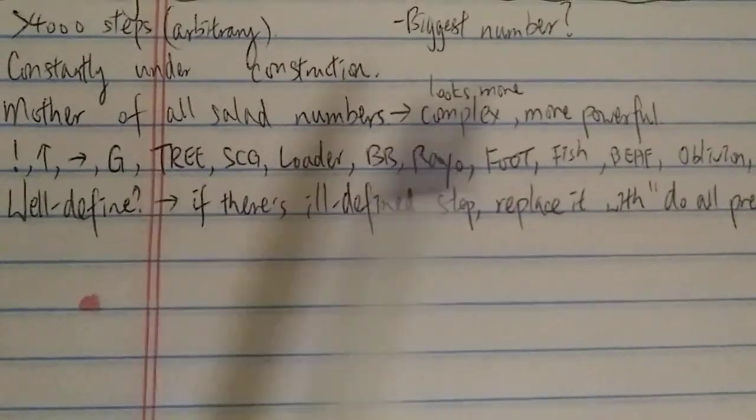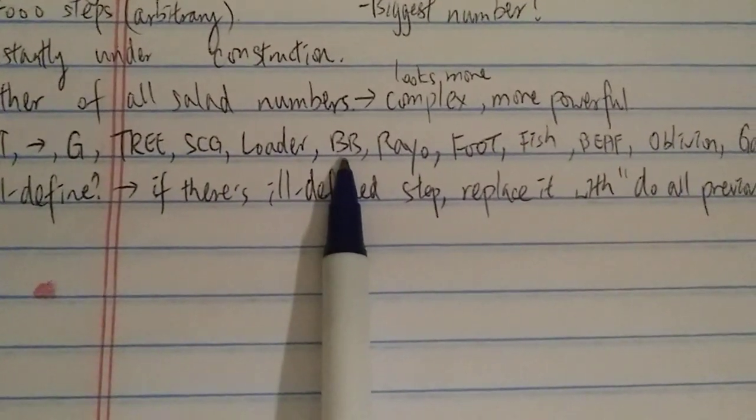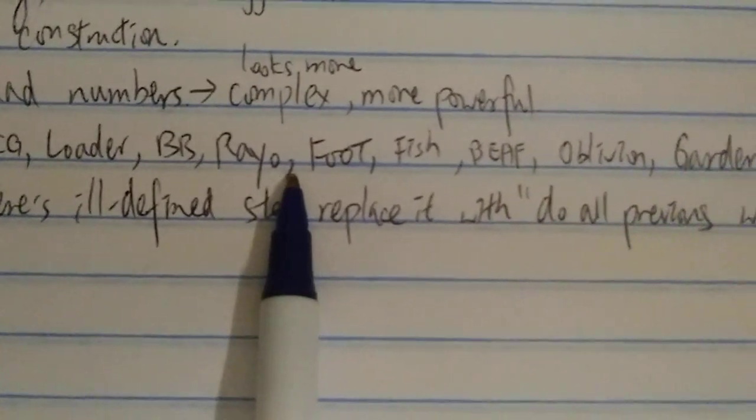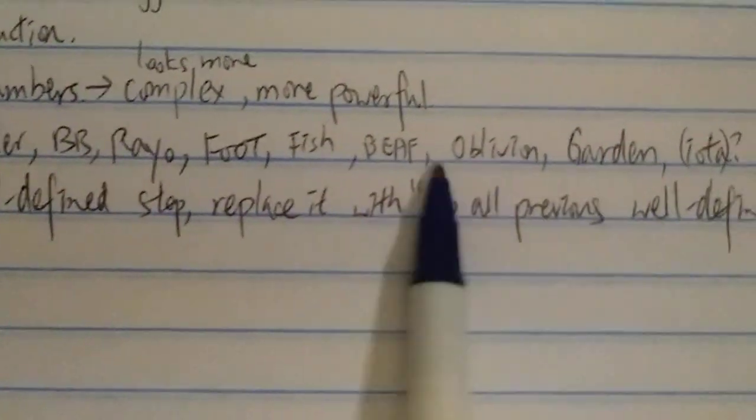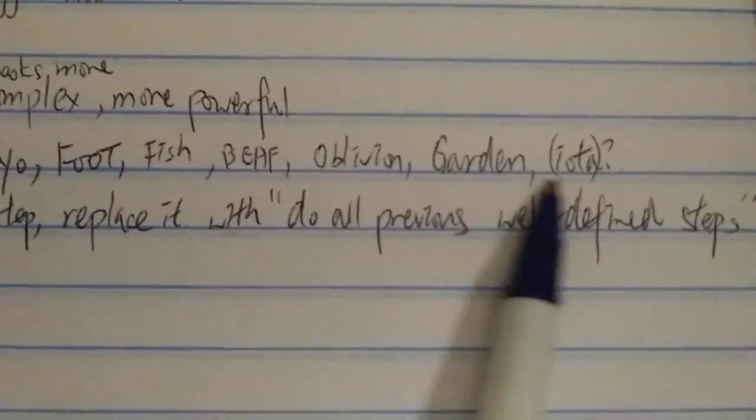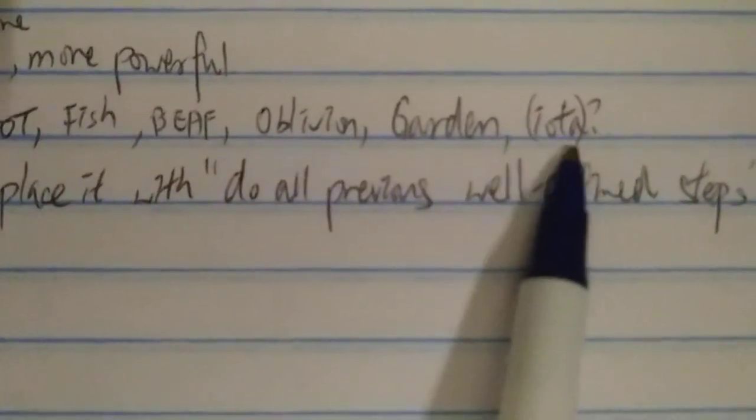GE sequence, Graham's number, tree, SCG, loader, busy beaver, rail, big food, fish, oblivion, garden, even the Garden's number. I'm not sure if they use this iota function.